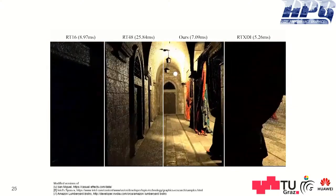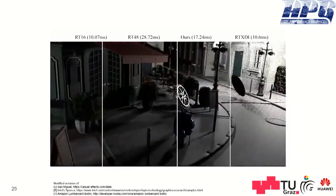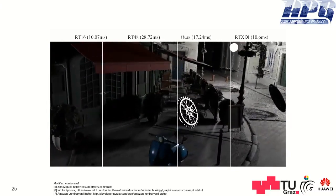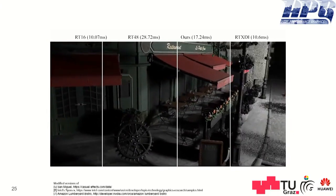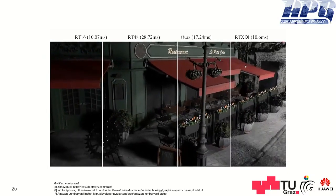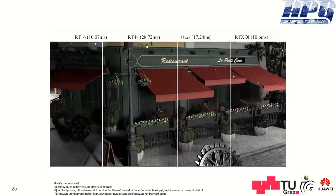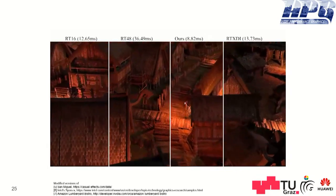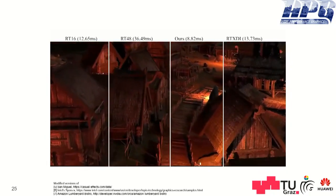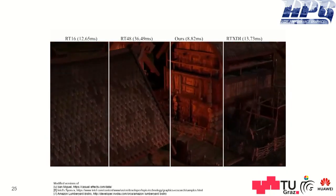We also have a Bistro exterior scene with moving lights and moving gears to show dynamic changes. Here you see that we are a bit slower than RTXDI because we have to adapt to these faster dynamic changes.